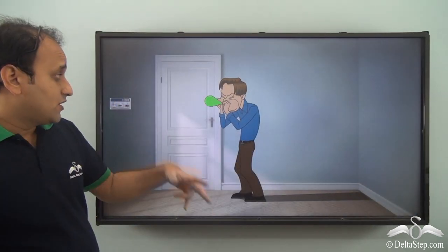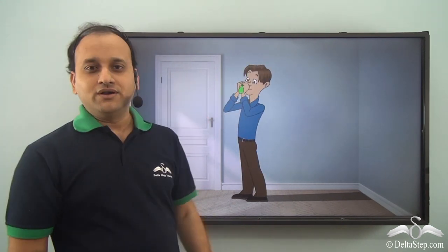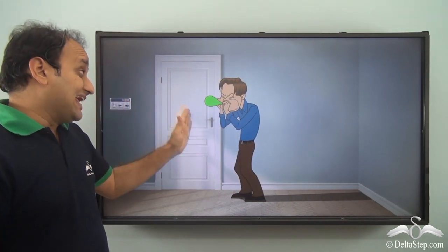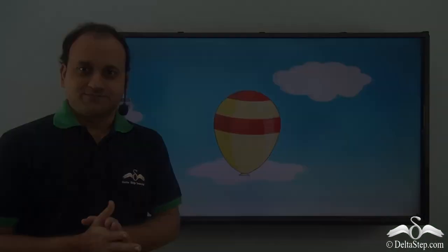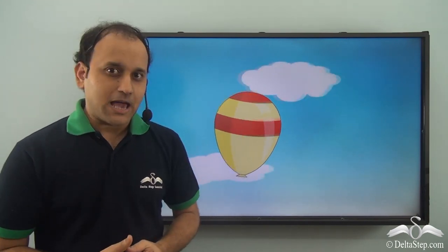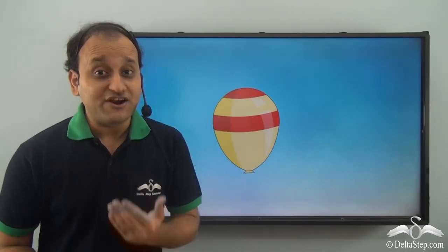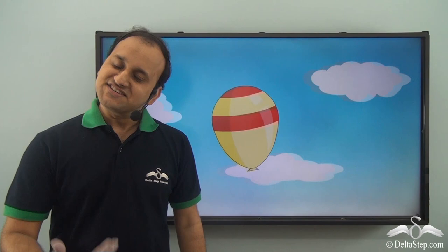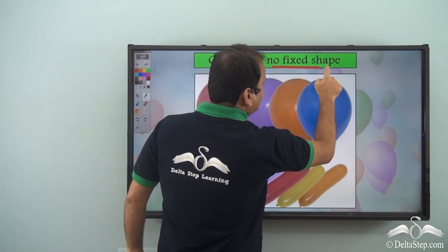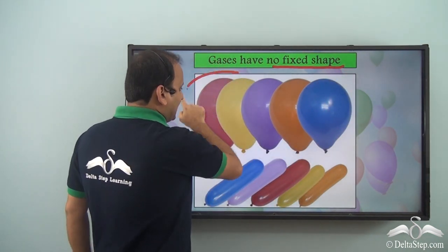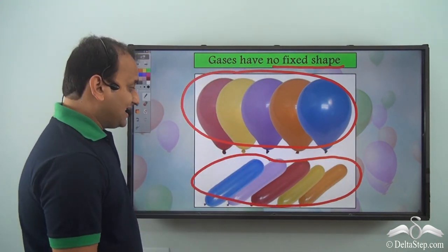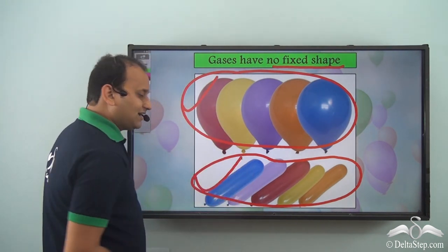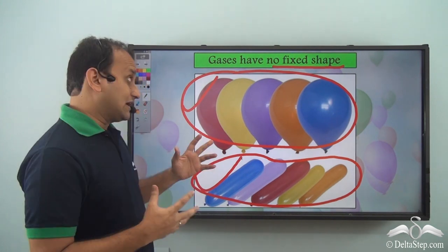Not only around the balloon, but even inside the balloon there is air. Because when you inflate a balloon, you blow air inside it. So even inside the balloon there is air, which is not visible. Air is all around us — balloons may have different shapes and colors, but they always have gases inside them. Apart from being invisible, gases also do not have a fixed shape. The same air can fill up round balloons, and the same amount of air can also fill up elongated balloons. Whichever container you store gas in, it will take the shape of that container.